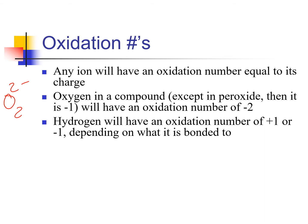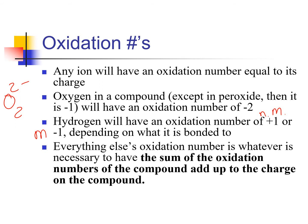Hydrogen will have an oxidation number of plus one or minus one, depending on what it's bonded to. It's plus one when bonded with nonmetals, and minus one when bonded with metals. Everything else's oxidation number is whatever it has to be so that the sum of all oxidation numbers of all atoms in the compound adds up to whatever charge is on that compound.